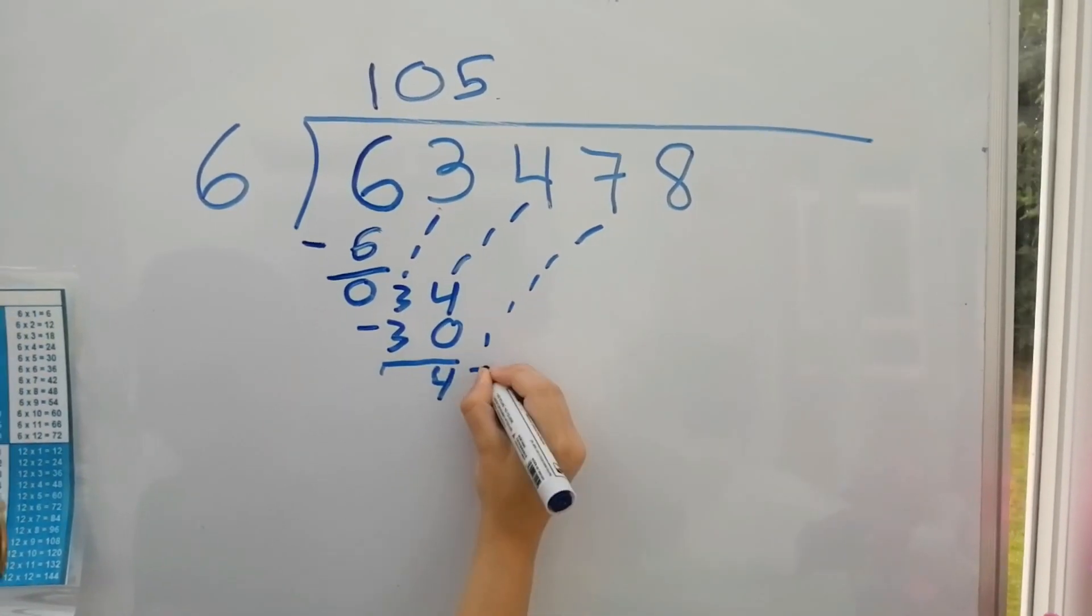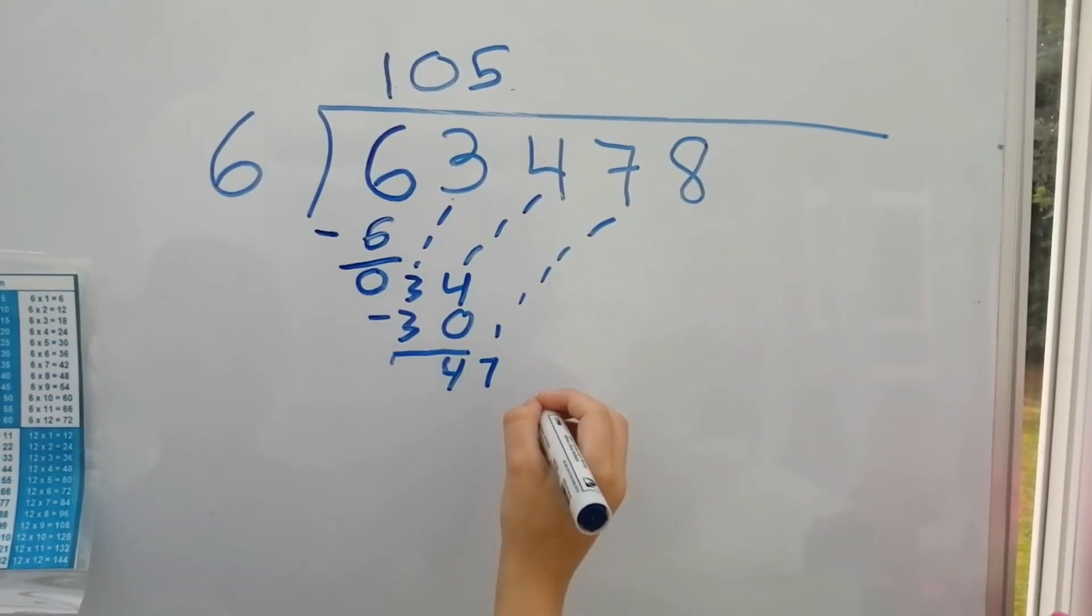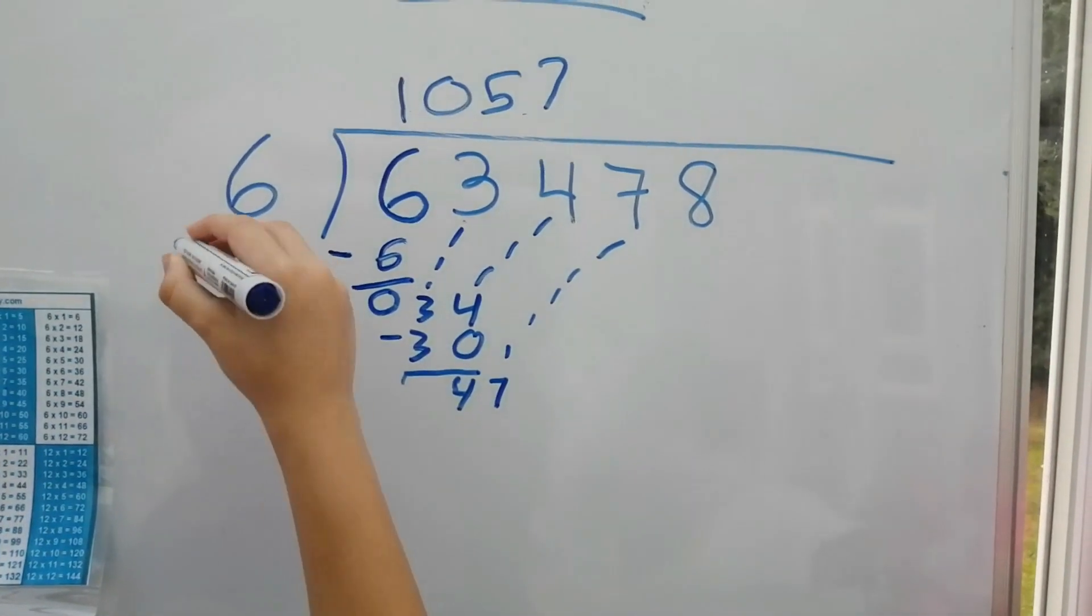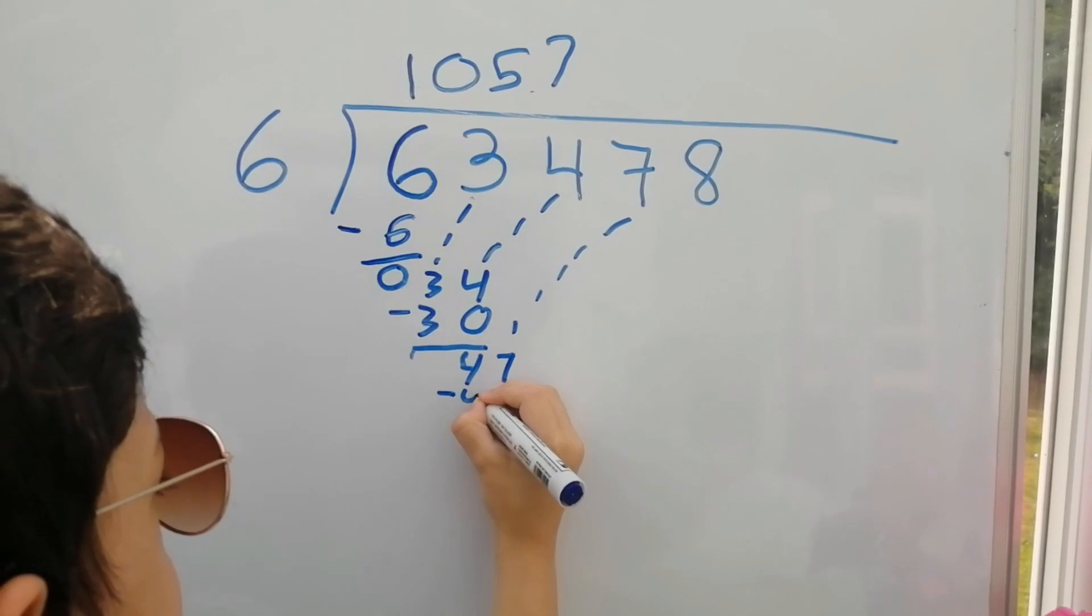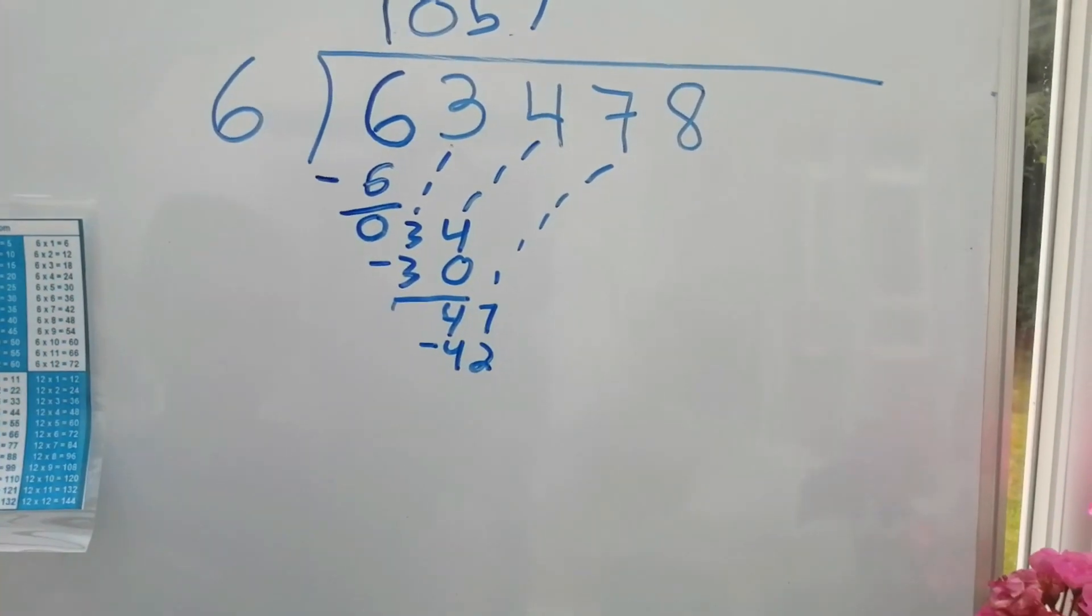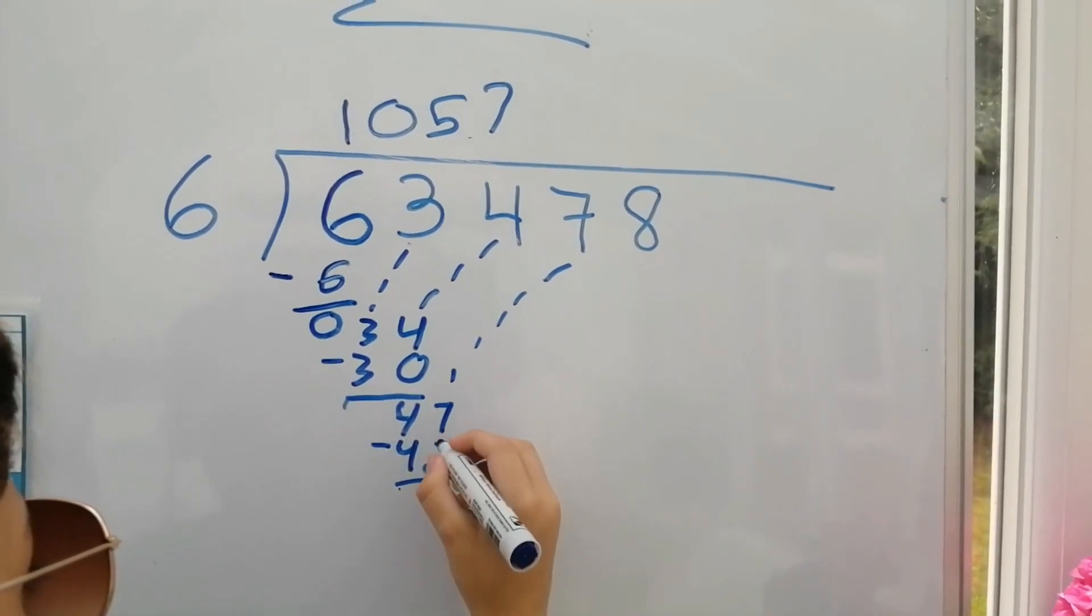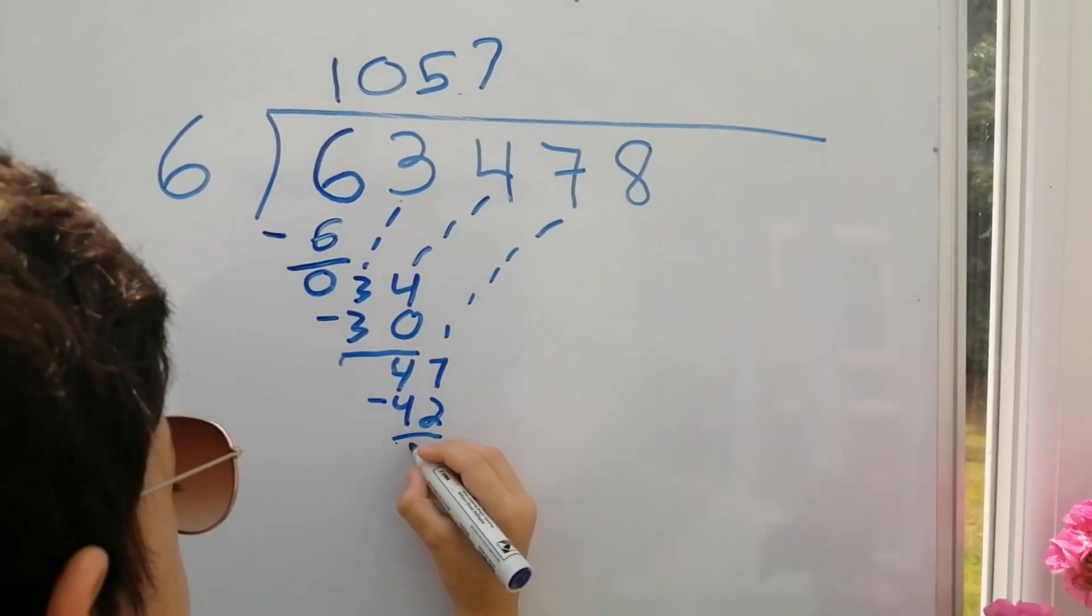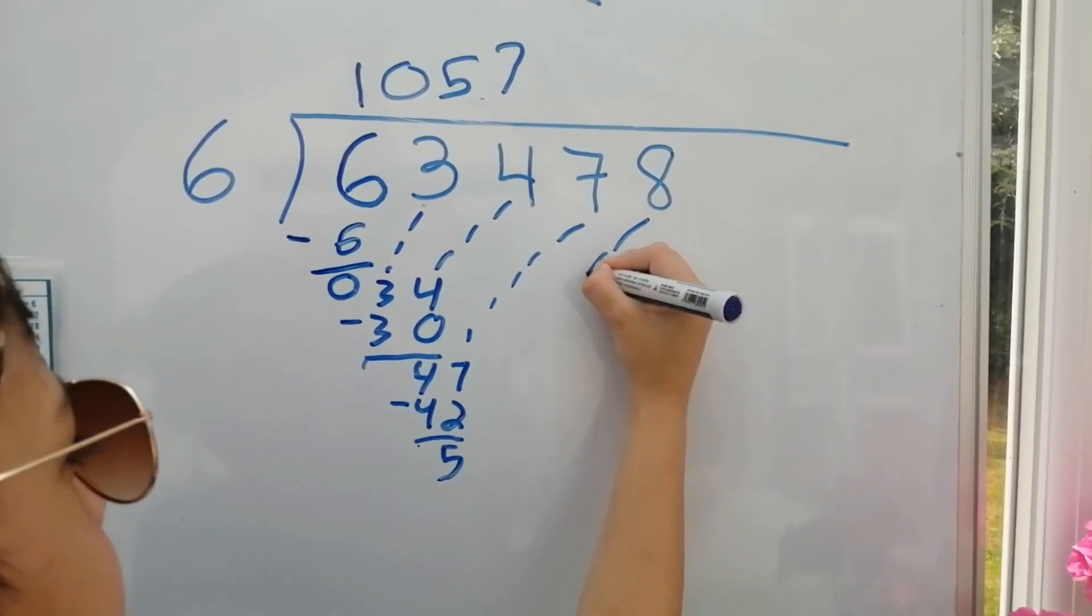Seven. Six into forty-seven is seven. Six times seven equals forty-two. So, forty-seven minus forty-two equals five. Put the next number down.